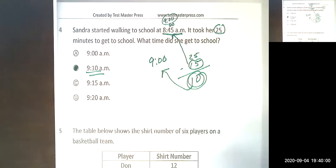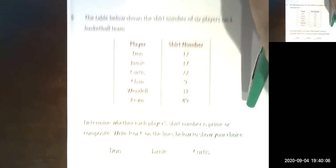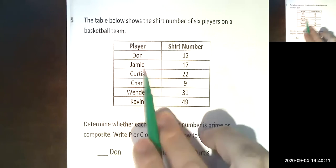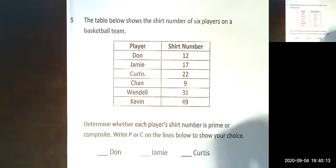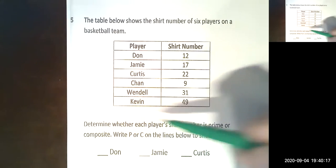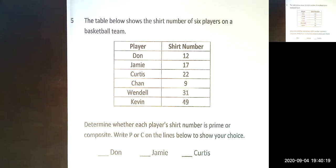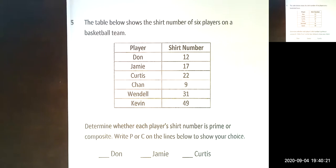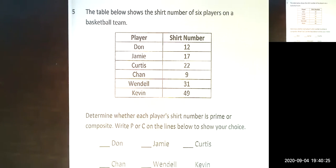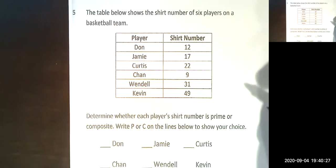Okay, our next question on composite numbers. The table below shows the shirt number of six players on a basketball team. So here's our chart: Don, Jamie, Curtis, Chan, Wendell, Kevin, and there's their numbers. Determine whether each player's shirt number is prime or composite. Write P or C on the line. So you have to know what a prime number is.